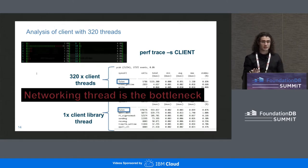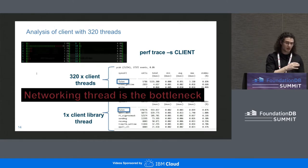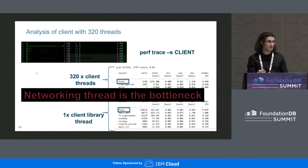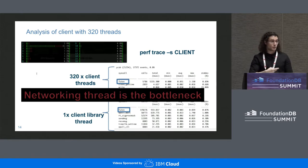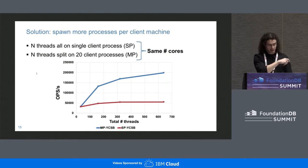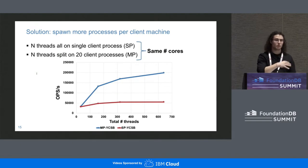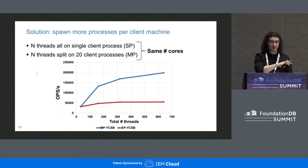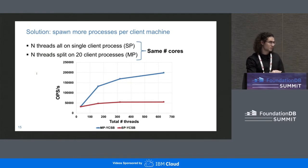The solution to get around this bottleneck is to spawn multiple client processes, each with its own library thread, instead of one single client process. We did that and performance increased significantly. In red we have the original configuration with all threads in one process; in blue we have the same number of threads distributed across 20 FoundationDB client processes. Performance and scalability are much, much better.